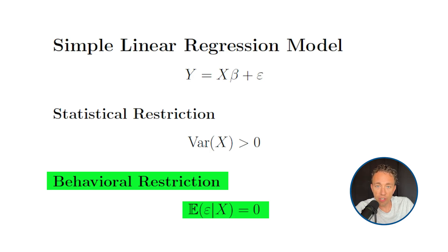The behavioral restriction is where economics comes in. It's an assumption about how the world works — that the unobservables in our population are not correlated with the observable x. And just as I discussed briefly in the last video, RCTs have restrictions too. They have behavioral restrictions about whether randomization actually removes any bias in treatment uptake, as well as assumptions about potential outcomes. So let's think a little bit more about identification using an RCT example.